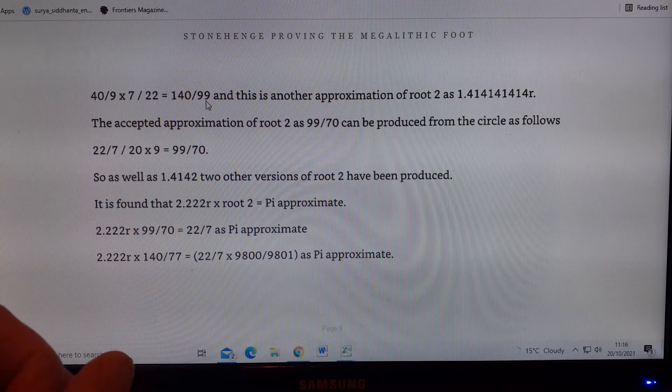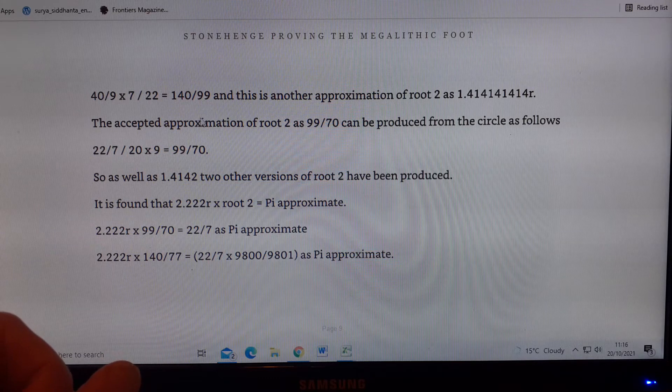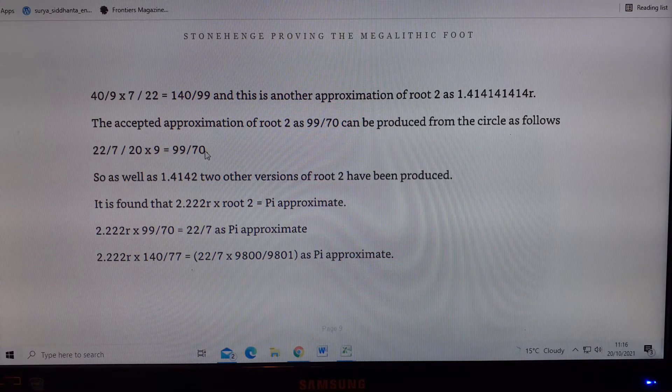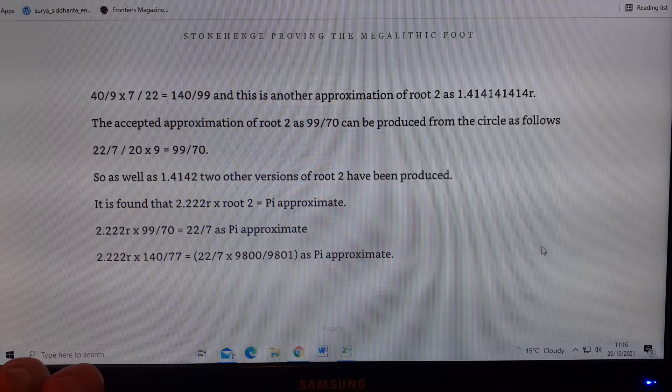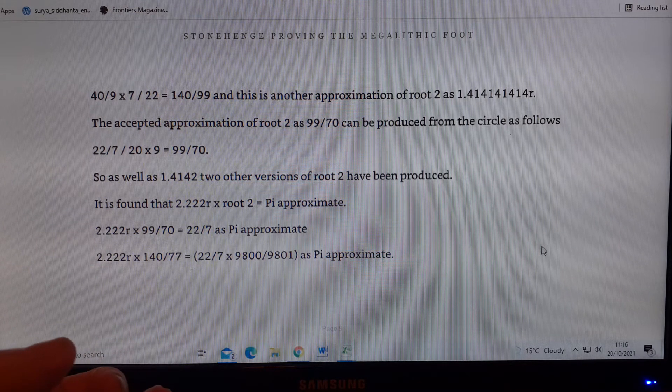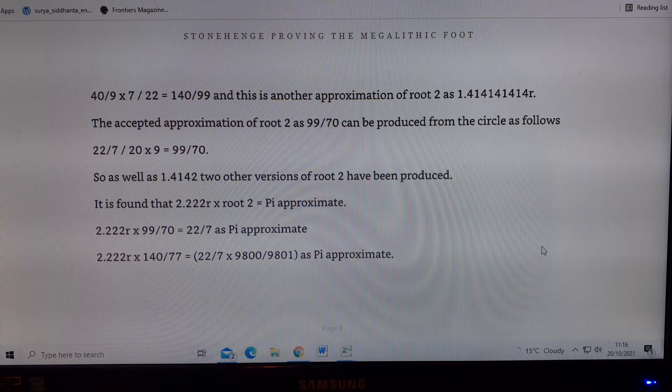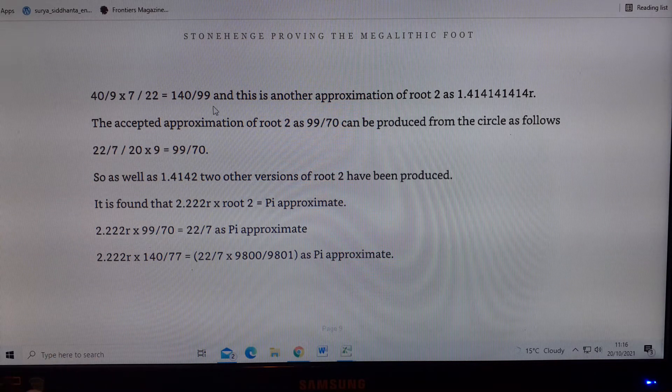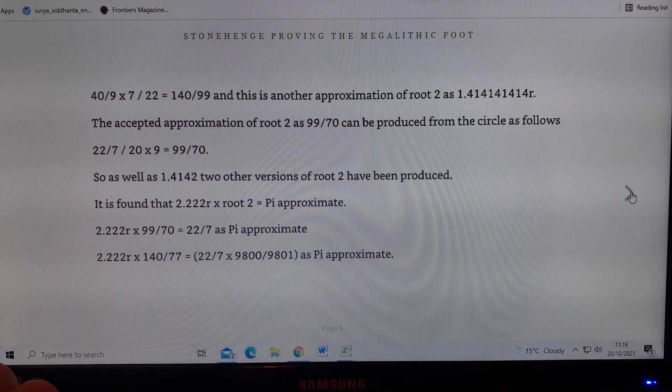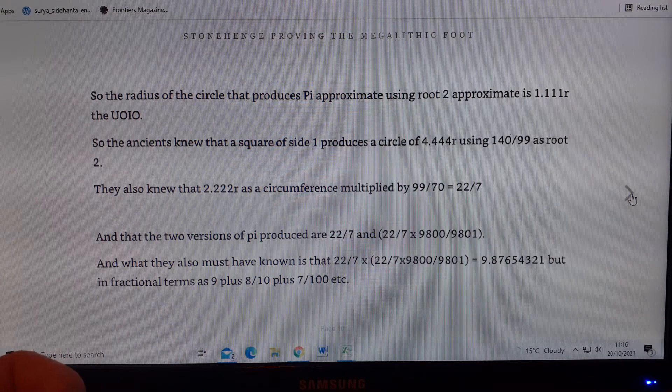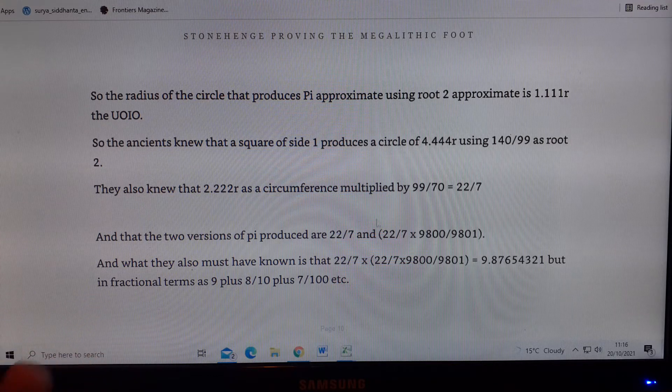These are the two approximations, 140 over 99, and 99 over 70. So you can imagine my excitement when I got Berryman's book about historical metrology, and he's saying that the Egyptians were using 140 over 99 and 99 over 70. To say that I was stunned by this was an understatement.